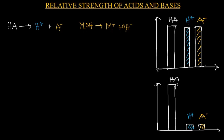So basically, that's what a strong acid and a strong base is. When a strong acid dissociates in solution, it will give you equal concentrations of H⁺ and A⁻, the conjugate base, which will have the same concentration as the original concentration of the acid. That means that everything has dissociated. If we take the vertical axis to be the concentration of the acid, it will produce equal concentration of H⁺ and A⁻ in that particular solution.